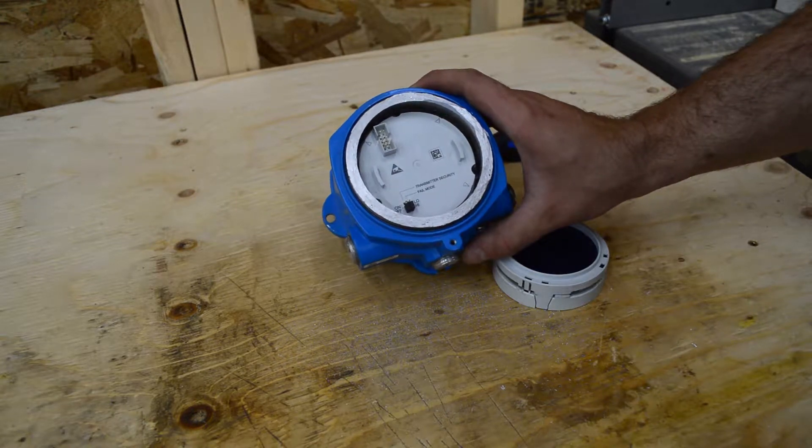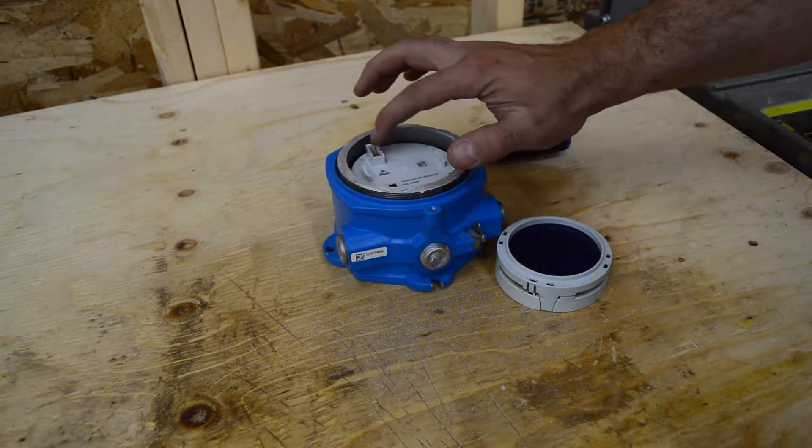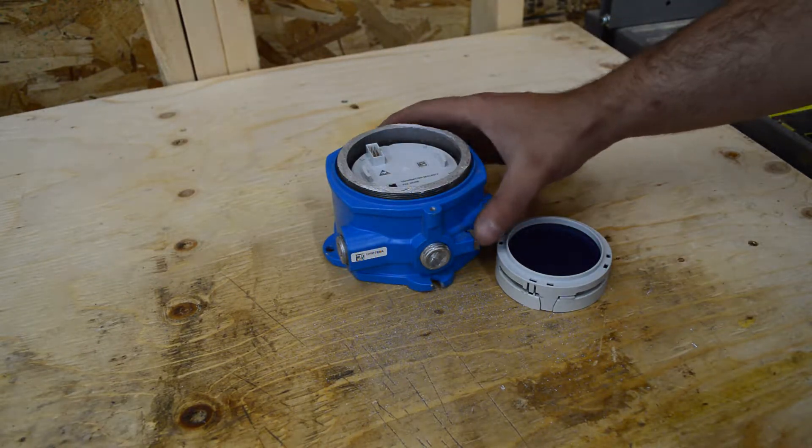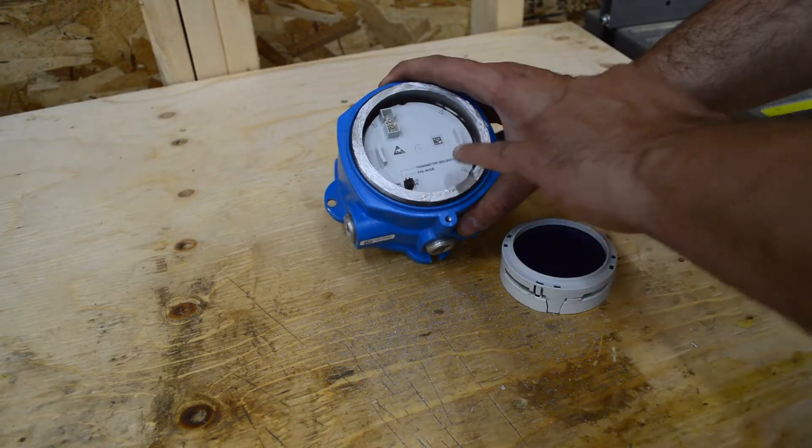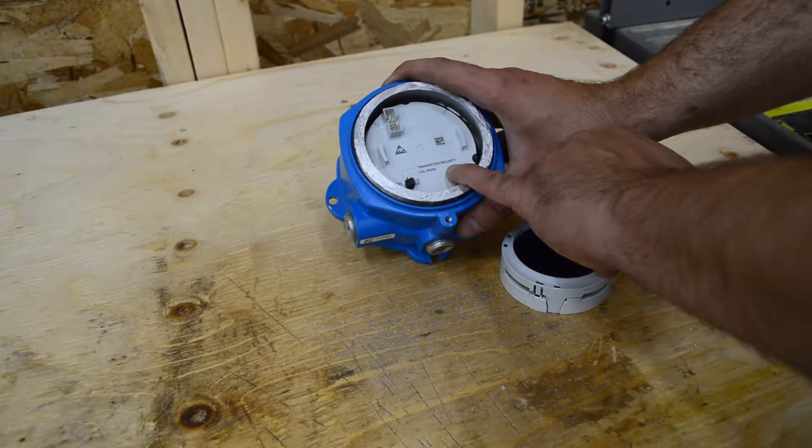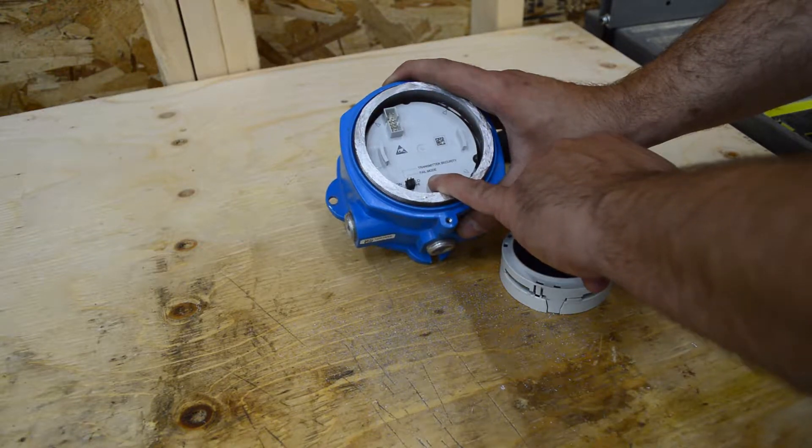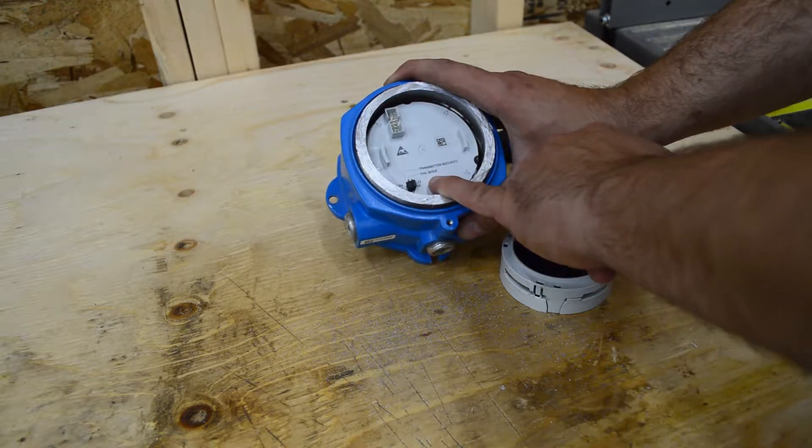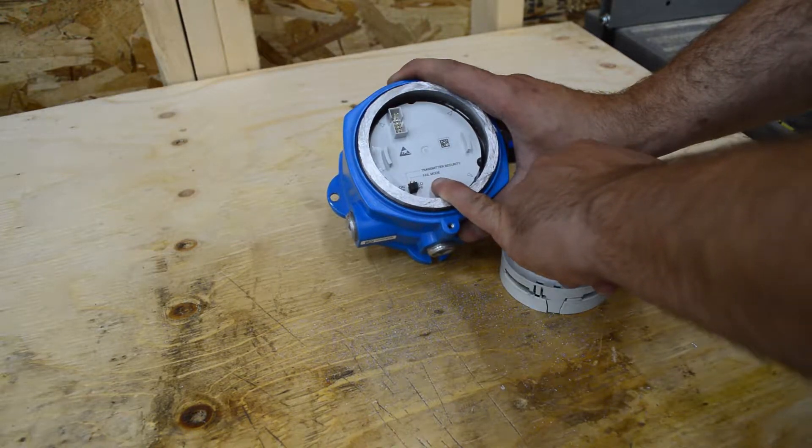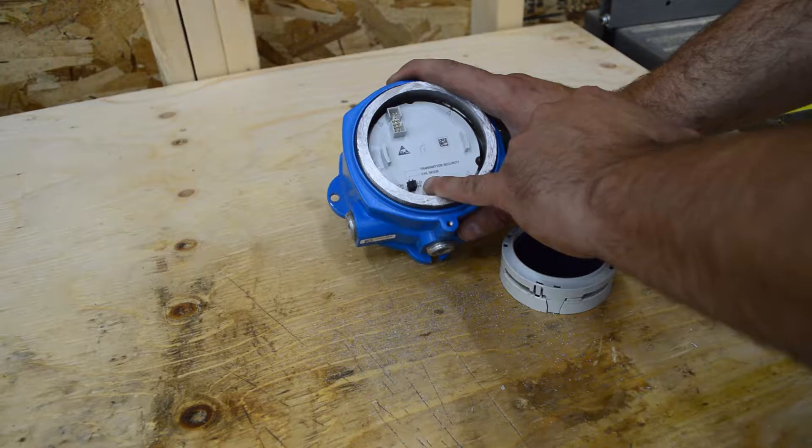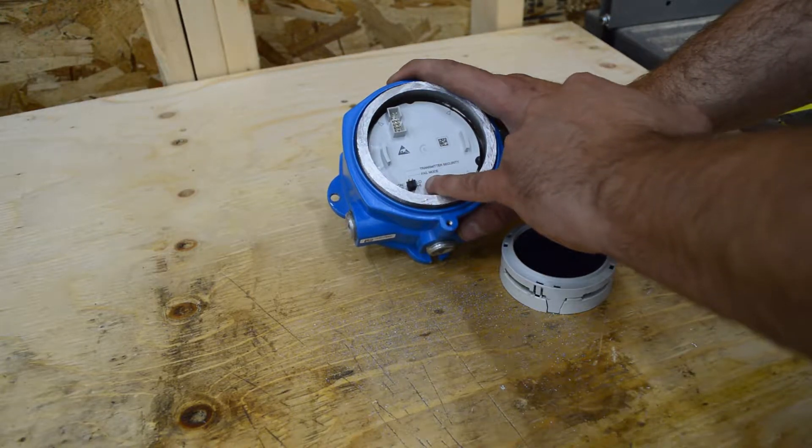So, pretty simple transmitter there. You got your screen pins there, security, and failure mode. So if you lose the RTD or the thermocouple, if there's a break in the line or something, it'll tell the transmitter to send out a high or low signal based on this jumper here.